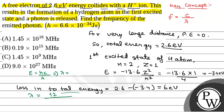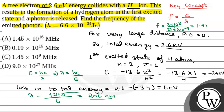Lambda will be equal to hc by E. Here hc is 1240 electron volt nanometer and E in electron volt is 6. So lambda will be 206 nanometer. Now frequency F will be equal to C by lambda. C is the speed of light, 3 into 10 to the power 8, and lambda is 206 nanometer, that is 206 into 10 to the power minus 9 meter. On solving, we get 1.45 into 10 to the power 15 hertz.